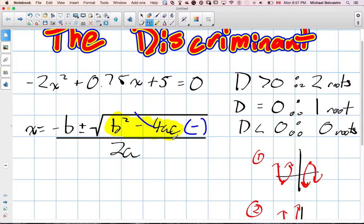And if it's a negative value, you can't square root a negative. So there are no roots in it. So all it is, is plugging in the A, the B, and the C into this little formula and figuring out what you get. So we can quickly do that.